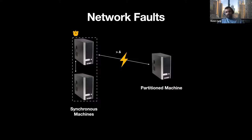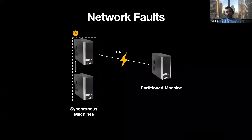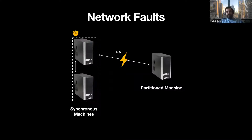We have some machines which can communicate synchronously — that is, the communication delay is bound by a delta. And then there are some machines which are partitioned, meaning there are no message delay guarantees provided by the network. On the left, you have synchronous machines; on the right, you have partitioned machines. This makes life especially difficult because it is difficult to distinguish a partitioned machine from a faulty machine.